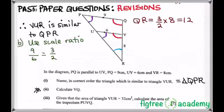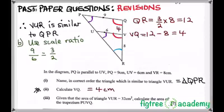3 over 2 times 8 is equal to 12. Therefore, we subtract 8 from 12 to find the length of VQ. Be in mind that 12 is for QR. And we are given VR is 8. So, we subtract from 12 to find VQ, which is 4. So, the answer was 4.